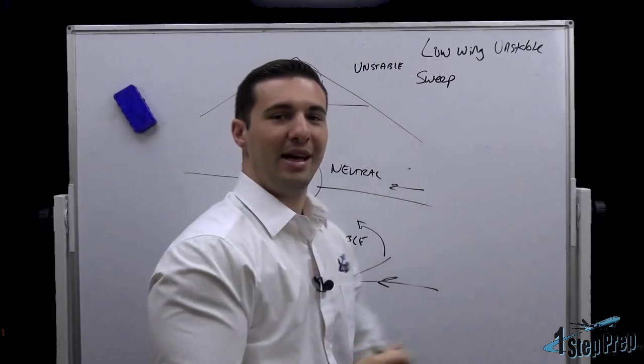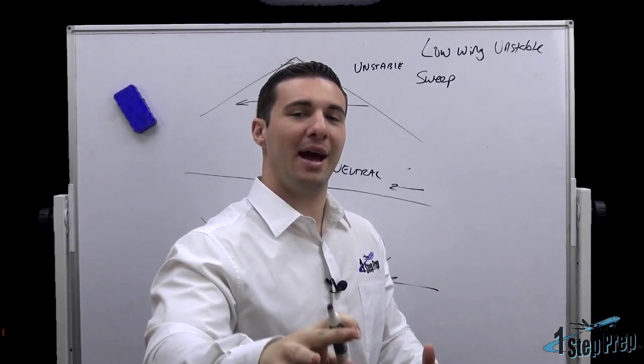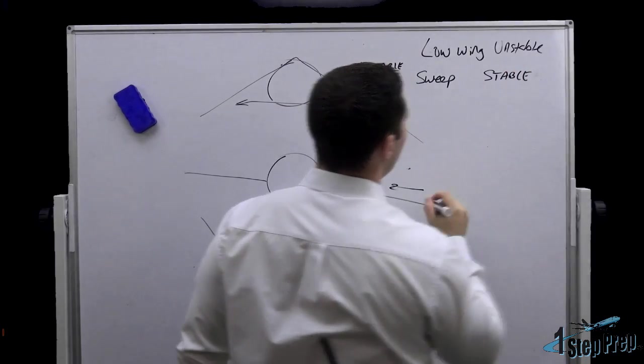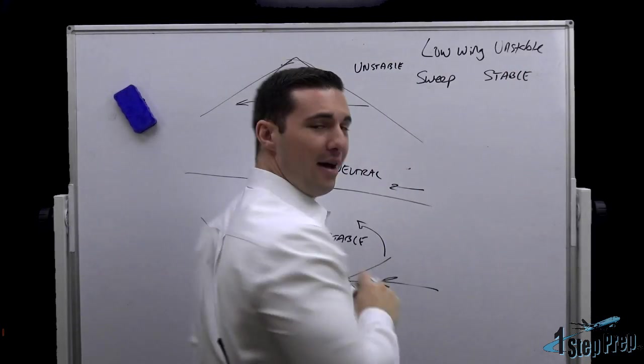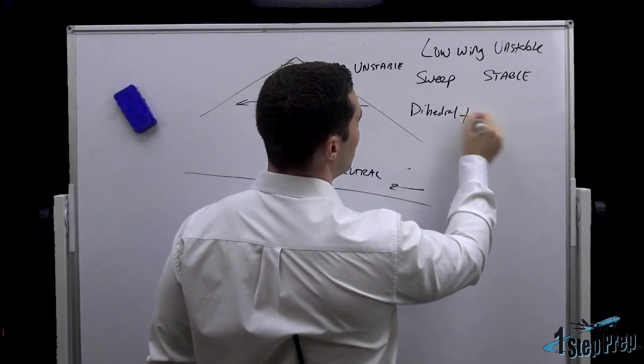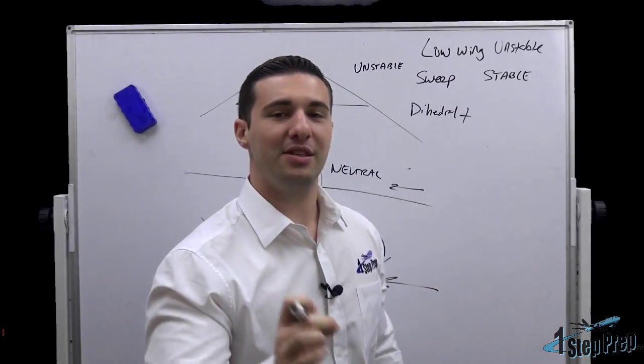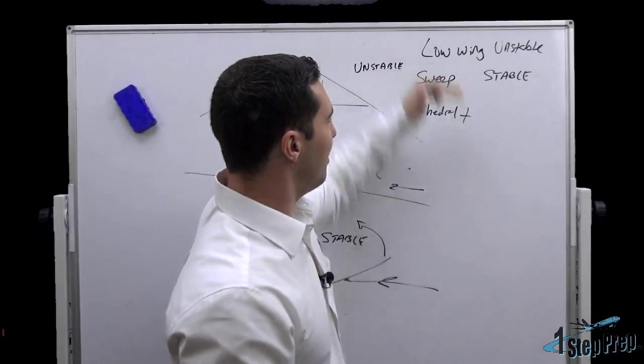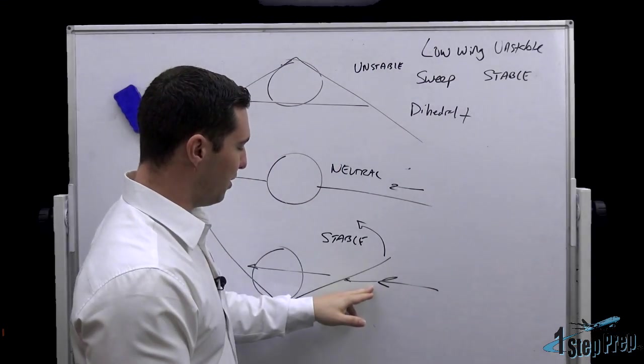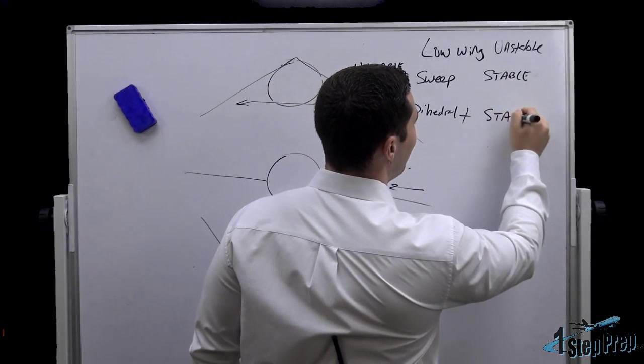Is sweep stable or unstable? Sweep should give us some added stability, right? And what else do we have? Dihedral. We do have some positive dihedral. I'll draw it with a plus. We do have some positive dihedral. The positive dihedral will give us what? An unstable or a stable platform? What does the positive dihedral do for us here? Just as we learned, it's going to roll away from the wind, so it's going to be a stable platform.